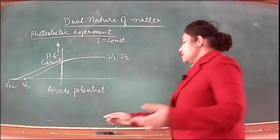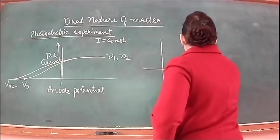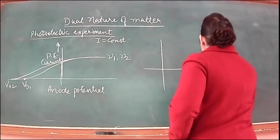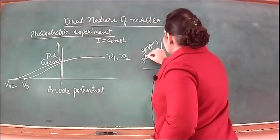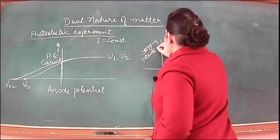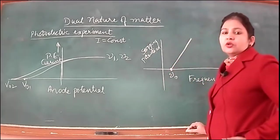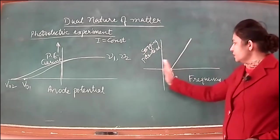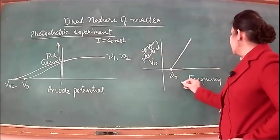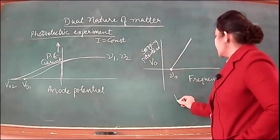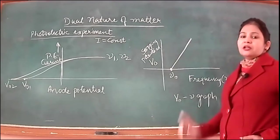Photoelectric current depends upon intensity of radiation. If we plot a separate graph between frequency of radiation and stopping potential, we get a straight line showing they are directly proportional to each other. The graph starts from a certain minimum value of frequency called threshold frequency. Below threshold frequency, no photo emission takes place. This graph is called the frequency-stopping potential graph.